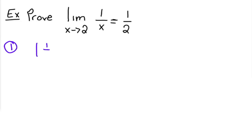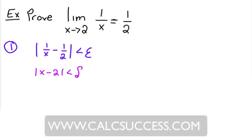So we set it up. F of x minus L is less than epsilon, and x minus C less than delta. So this is what we want, this is what we know.